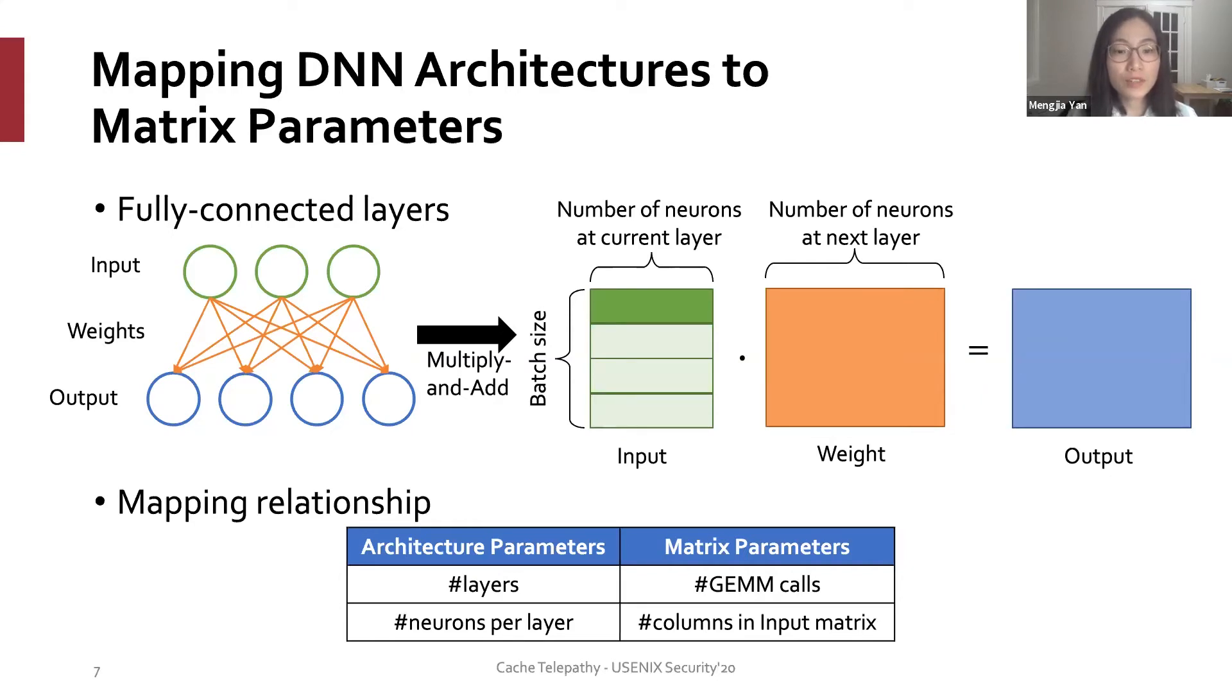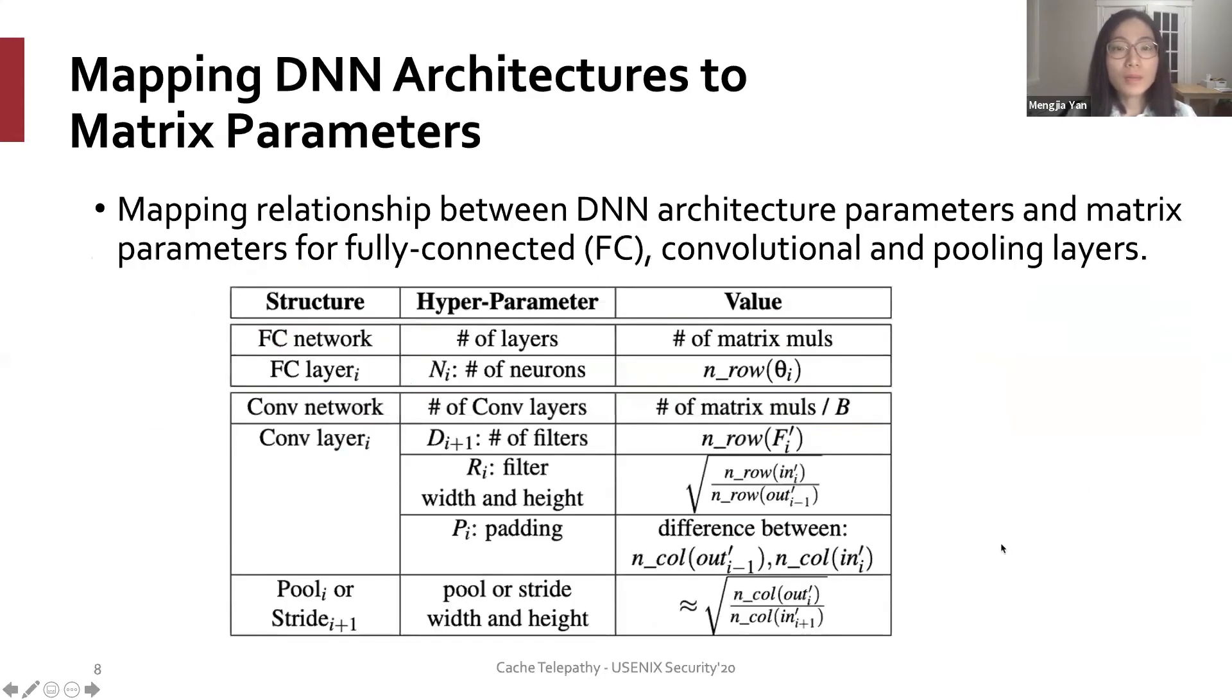Since the computation of each layer triggers exactly one GEMM call, the number of layers equals the number of GEMM calls. And as we analyzed, the number of neurons at each layer equals the number of columns in the input matrix. You can apply the similar but slightly more complicated analysis to derive the mapping relationship for convolutional layers and pooling layers. We would encourage you to refer to the paper for more details.